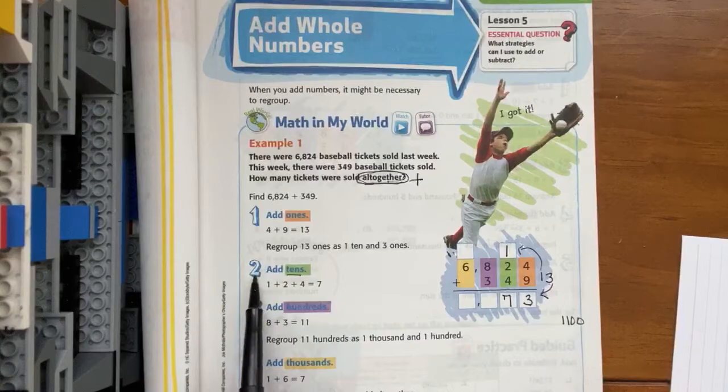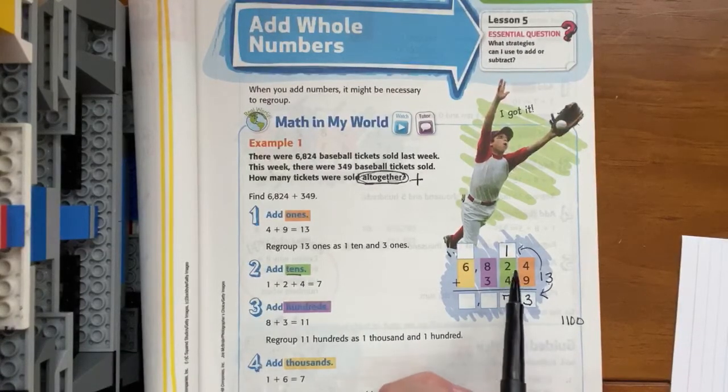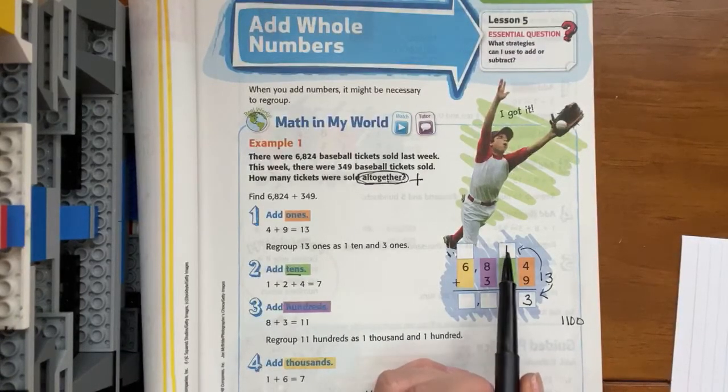Once we've done that, we move to step two, where we add the tens. So we have four plus two more is six, plus one more is seven, and I recorded seven in the box.